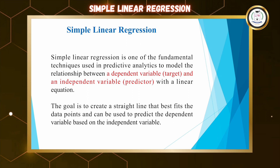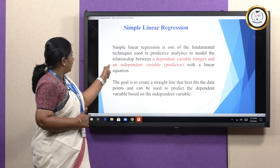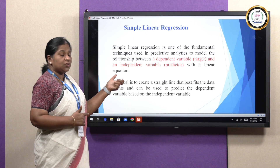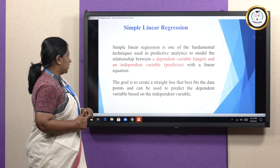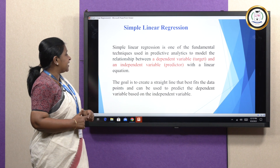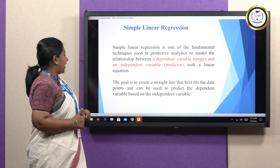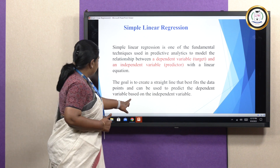Let us look into the topic of simple linear regression. In simple linear regression, we have a single independent variable using which we predict the dependent or target variable. The goal is to create a straight line that best fits the data points and can be used to predict the dependent variable based on the independent variable.